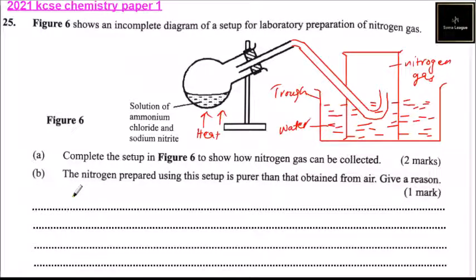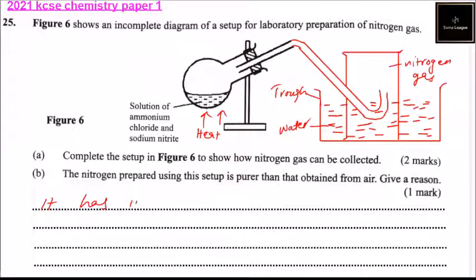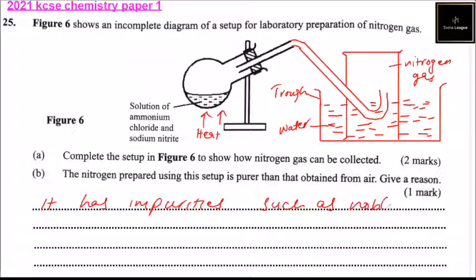Then we have part B. The nitrogen prepared using this setup is purer than that obtained from air — give a reason. The nitrogen obtained from air has impurities, such as noble gases. That is why it is not as pure as the one prepared using this setup. By doing that, you get three marks.